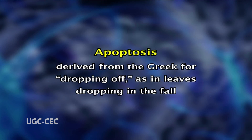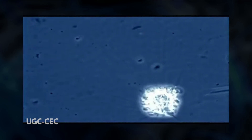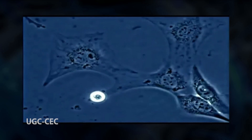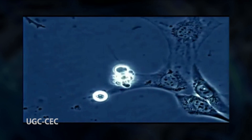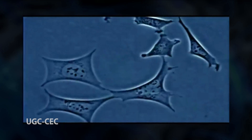Many cells can precisely control the time of their own death by the process of programmed cell death, or apoptosis, which is derived from the Greek word meaning 'drooping off,' as in leaves drooping in the fall. The term apoptosis was coined in 1972 by John Kerr, Andrew Wyllie, and A.R. Currie.